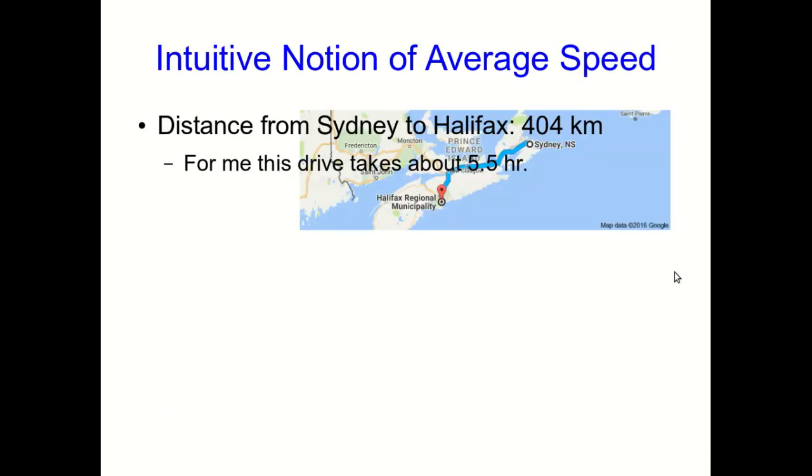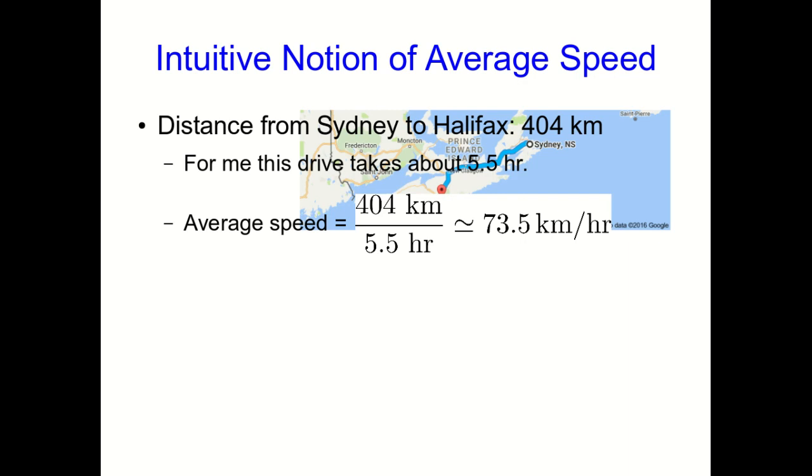We're finally ready to tackle speed and velocity. So let's think about driving from Sydney to Halifax, which many of you will have done. Google Maps tells me that's 404 kilometers, and for me that drive would take about five and a half hours. So we can say that my average speed would be 404 kilometers divided by 5.5 hours, and that's 73.5 kilometers per hour.